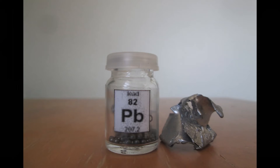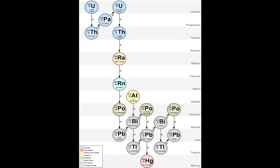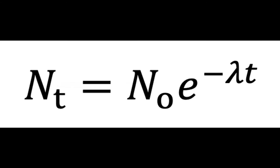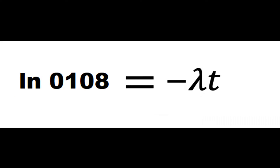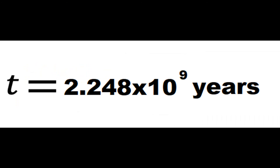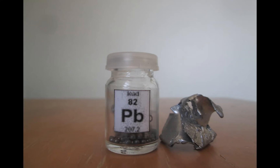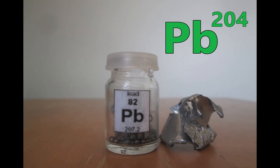Knowing this, we can calculate how long lead-206 has been accumulating, knowing it came from uranium-238 entirely. Using this simple equation, based on my analysis, we arrive at an age of about 2.2 billion years — so I detected too much lead, or not enough uranium, or both. The lead-lead dating technique is based on the constant presence of non-radiogenic lead-204.